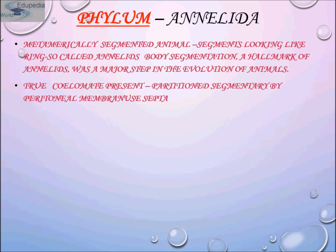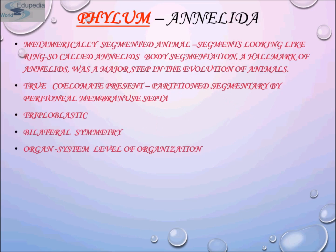Annelids have a true coelom which is partitioned segmentally by peritoneal membrane septa. They are triploblastic in nature, have bilateral symmetry, and have organ-system level of organization. Their body is covered with a thin layer of cuticle secreted by the ectoderm, made up of keratin.